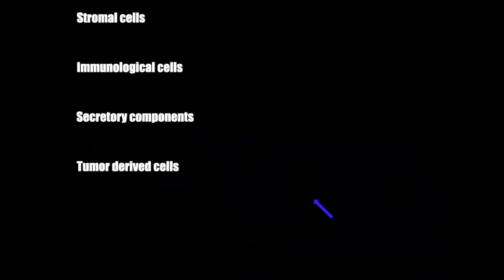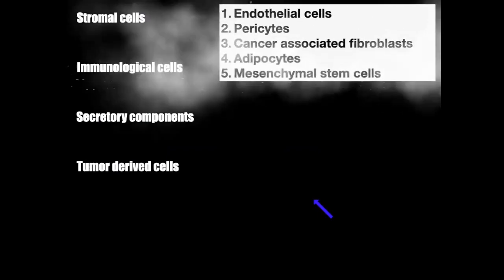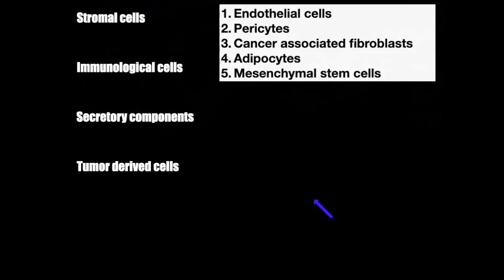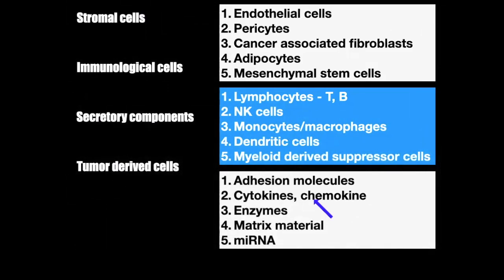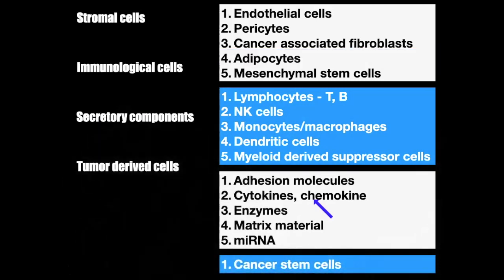Coming to the components of the tumor microenvironment, there are predominantly four types: stromal cells, immunological cells, secretory components, and tumor derived cells. In stromal cells we have five members: endothelial cells, pericytes, cancer-associated fibroblasts, adipocytes, and mesenchymal stem cells. In immunological cells we have T and B lymphocytes, natural killer cells, dendritic cells, monocytes and macrophages, and myeloid derived suppressor cells. Secretory components include micro RNAs, enzymes, matrix material, cytokines, chemokines, and adhesion molecules. Tumor derived cells are cancer stem cells that form part of the tumor microenvironment.